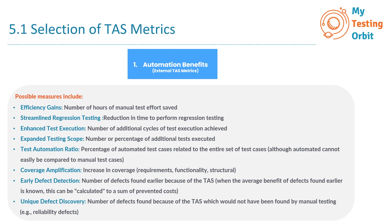Then we have unique defect discovery: the number of defects found because of the TAS which would not have been found by manual testing — for example, reliability defects. In this metric, you identify defects uncovered solely because of automation, which might have been missed in manual testing.